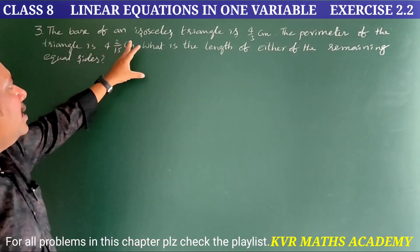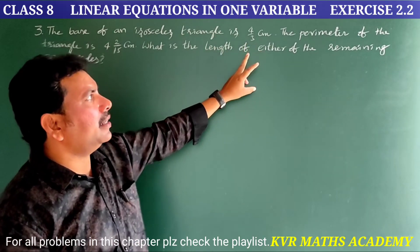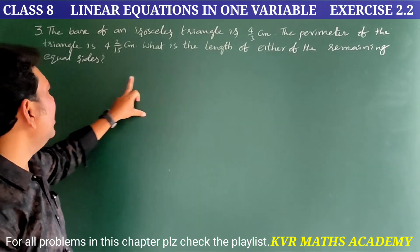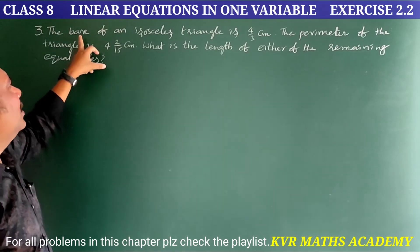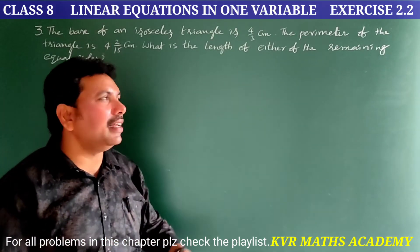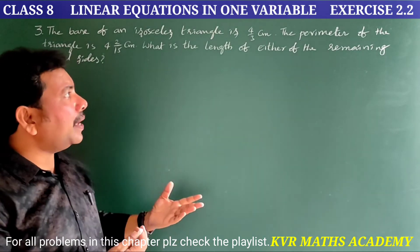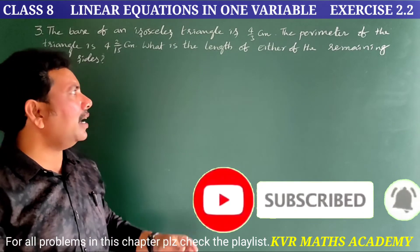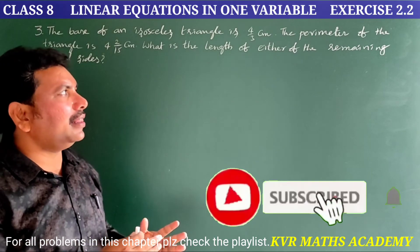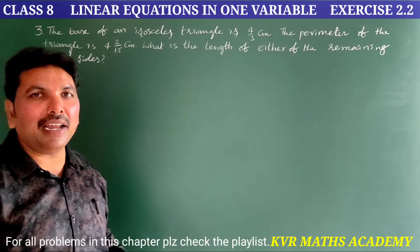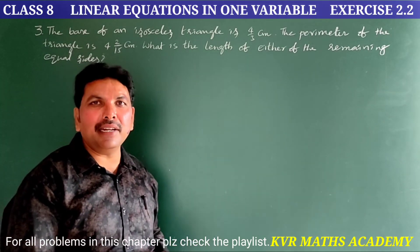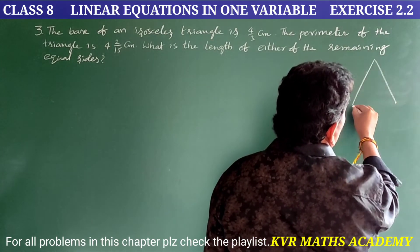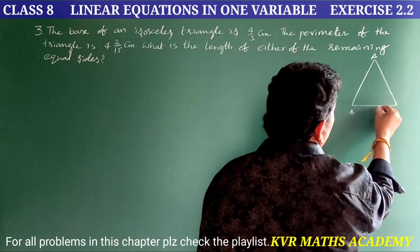Third question. The base of an isosceles triangle is 4/3 centimeters. The perimeter of the triangle is 62/15 centimeters. We have to find the length of the remaining equal sides.